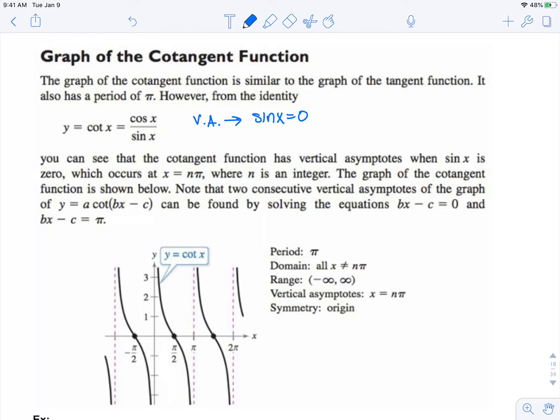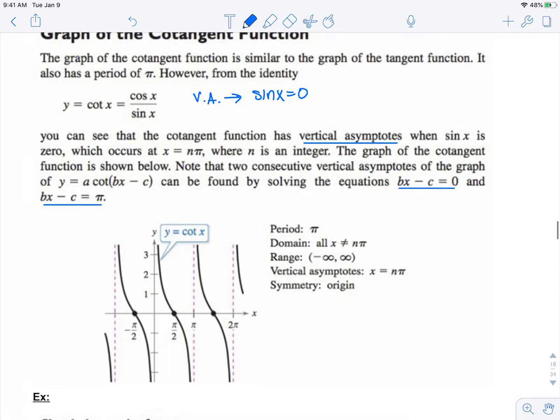And that's going to be at multiples of pi. So we find our vertical asymptotes when what's inside of our cotangent equals pi, or when it equals zero. So mostly everything's the same.